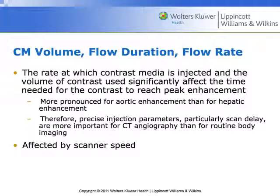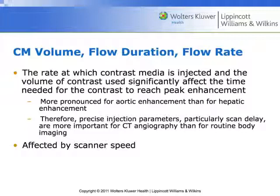If we want a more pronounced arterial enhancement, we're going to have to increase the flow rate quite a bit. There's a table in the book around page 158 showing the impact of flow rate on Hounsfield aortic contrast enhancement. At a 5 mL per second flow rate, you can get aortic enhancement in the range of 300 to 350 Hounsfield units. But at a flow rate of 1 mL per second, not only is the enhancement peak delayed, it never rises much above 150 Hounsfield units. So to achieve arterial enhancement, we increase the flow rate.